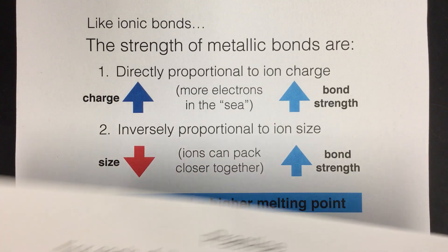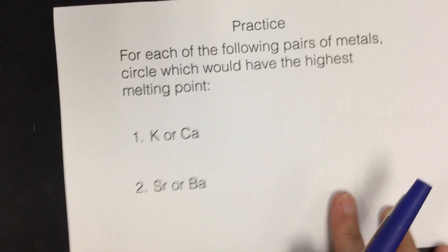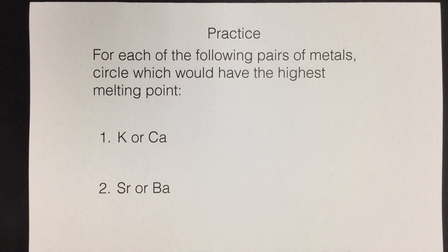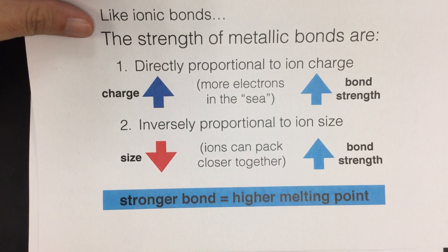We'll take a look at just a couple examples from notes, and I'm going to draw little diagrams for these so we can see what's going on. We want to figure out for each of these pairs which one would have the higher melting point, in other words, the stronger bond.